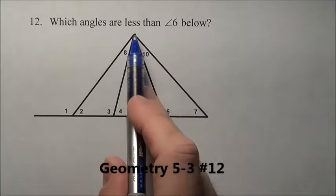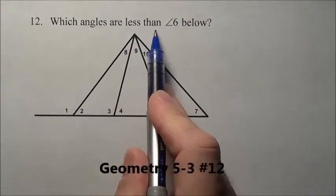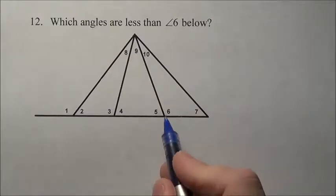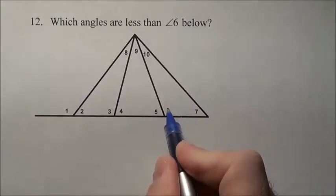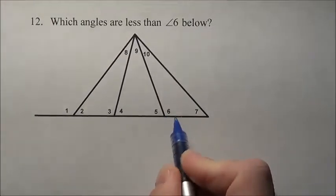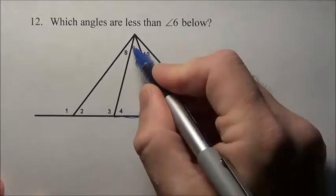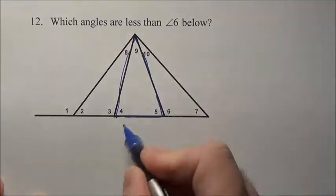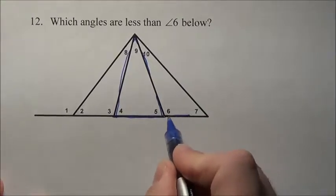Problem 12 says which angles are smaller than angle 6 below. So here's angle 6. Now 6 is an exterior angle to this triangle right here. See it's sort of on the outside.